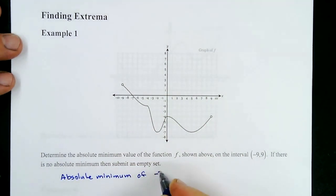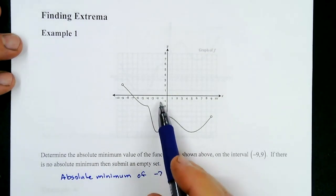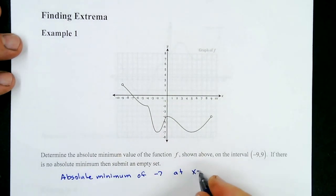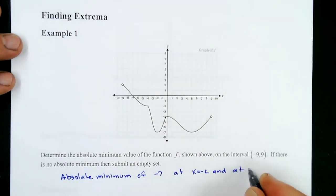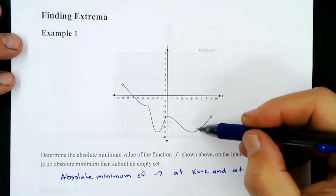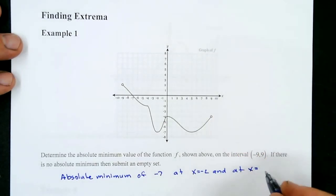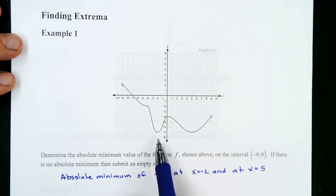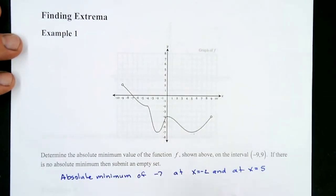The absolute minimum of negative seven is actually going to occur at two places: it's going to occur at x equals negative two and at x equals five. In Delta Math they're just asking you for the absolute minimum, so you're just going to type in negative seven — you don't have to type in the location for these particular problems.